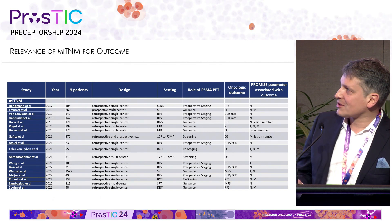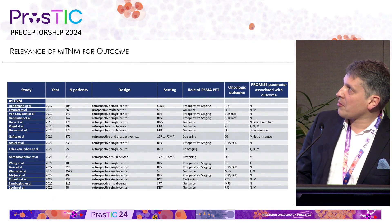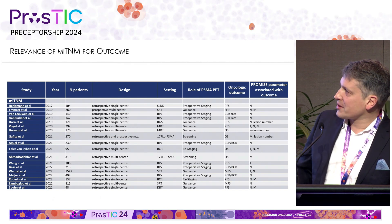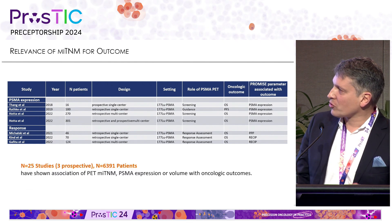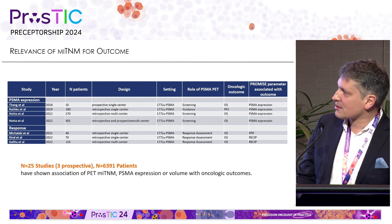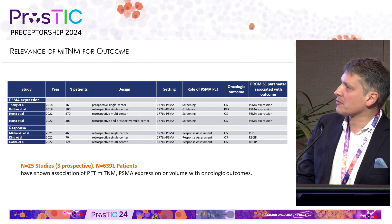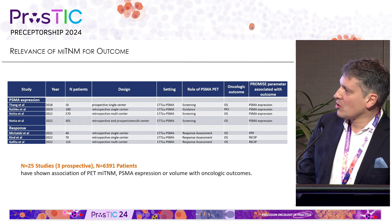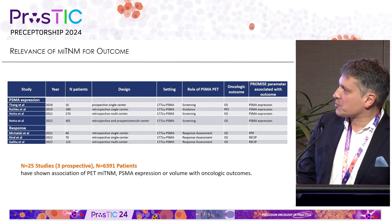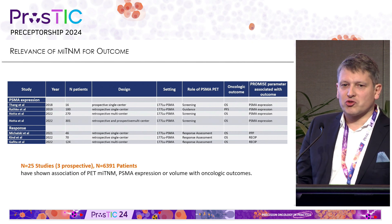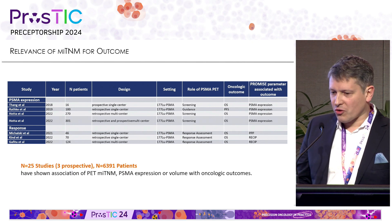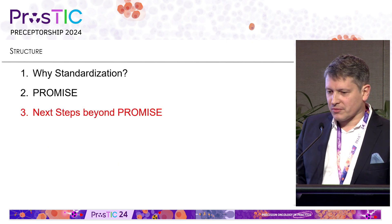Regarding the value of the MITNM score: a total of 25 studies, three of them prospective, more than 6,000 patients. Each has shown some association of the PROMIS MITNM score, PSMA expression, or volume with oncological outcomes. When we do something, we want to show that it has impact on oncological outcome — and this is important.